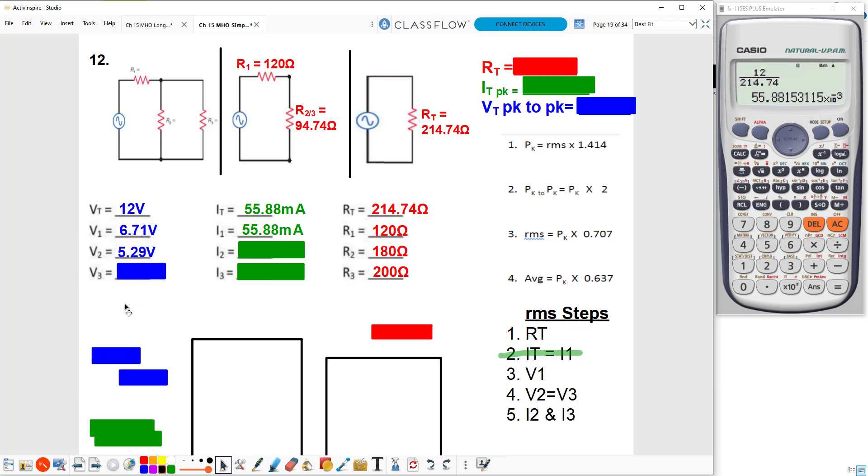All right, now I've got two out of three for I2, so I can take the 5.29 volts divided by 180 ohms, gives me 26.45 milliamps, and that completes all of my RMS values, all of my RMS steps. So all of these voltage values, all of these current values are RMS values.